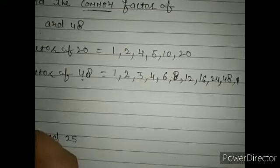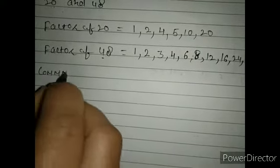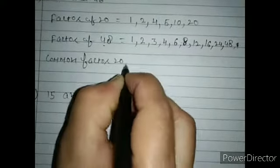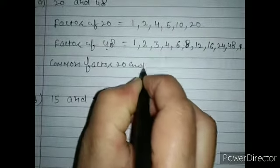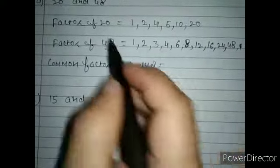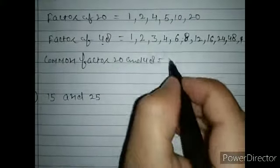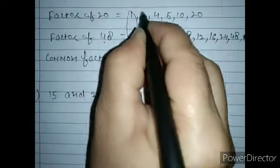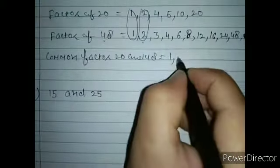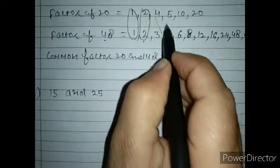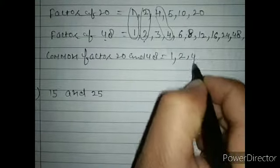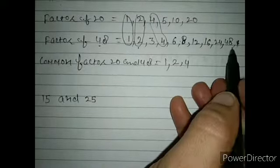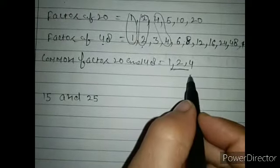Now we have to find the common factors of 20 and 48. The common factors are: 1 is common, 2 is common, 4 is common. After 4, no other factor is common. So the common factors of 20 and 48 are 1, 2, and 4.